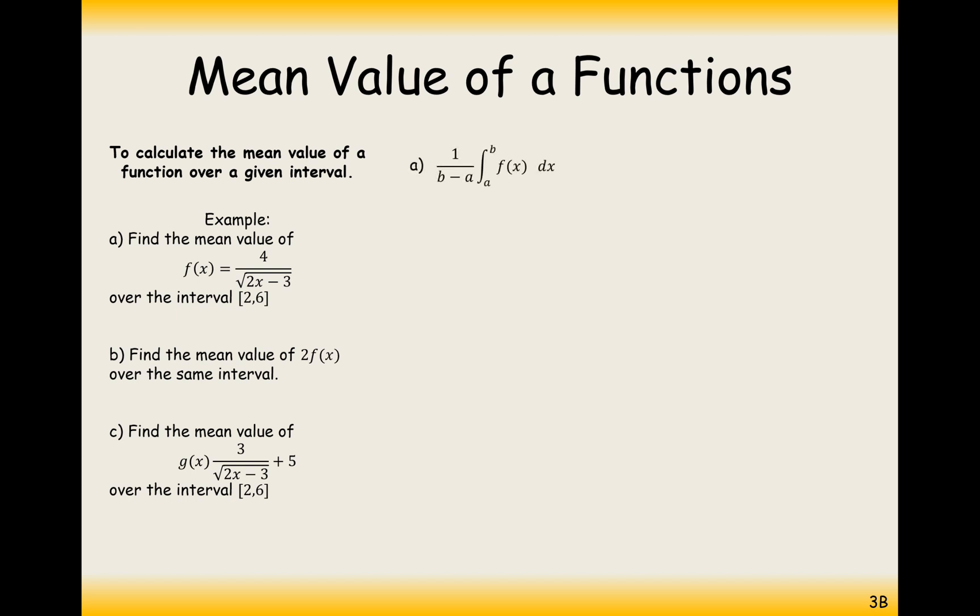So we'll take that integral that we saw before and just plug in the values. So a is going to be two, b is going to be six. And this is our function. So let's go ahead and plug all the numbers in. It's going to be one over four because that's six minus two, which is four. The integral is going to be between six to two. And the function is four over the square root of two x minus three.